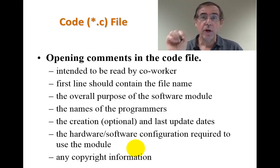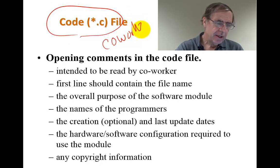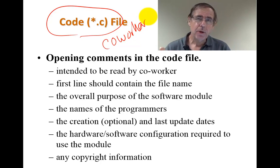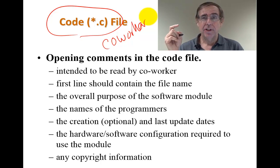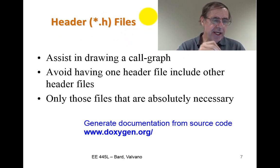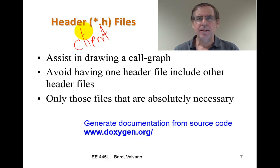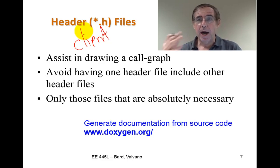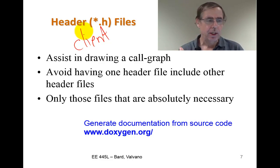It's important to realize who's going to read the comments. The C file is our co-worker — that's our self six months from now. We're going to put into comments in the C file everything we need to debug it, change it, modify it, understand how it works. The H file is used by our clients, the people who are going to use or buy our software. It answers: what does it do, how do I use it, what's the high-level understanding, what are the parameters, inputs, and outputs.